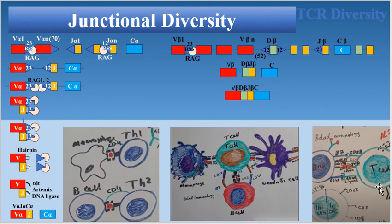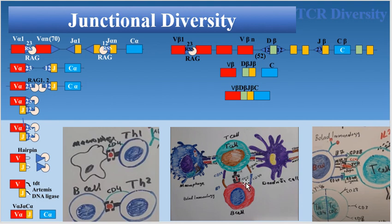T lymphocytes cannot see tertiary protein — for example, they cannot see bacteria directly. To see bacteria, it should first be taken up by an antigen presenting cell such as a dendritic cell, B cell, or macrophage. Then the tertiary protein gets processed inside the antigen presenting cell and presented on the surface in association with the major histocompatibility complex.